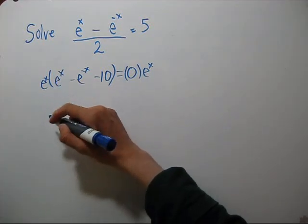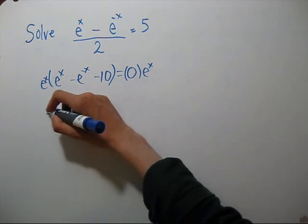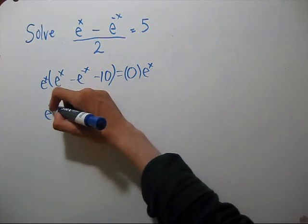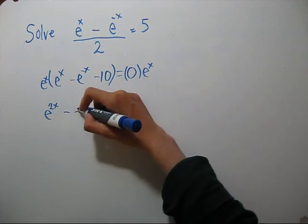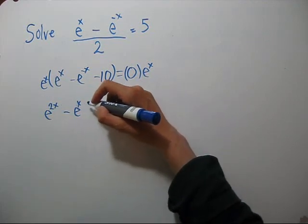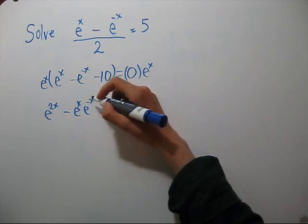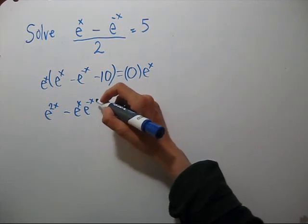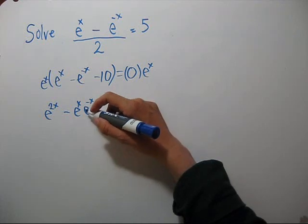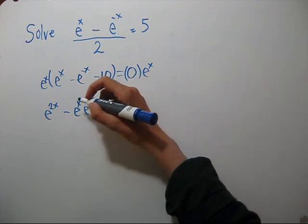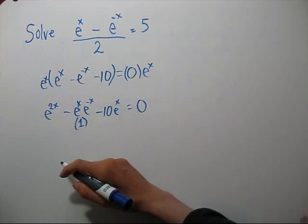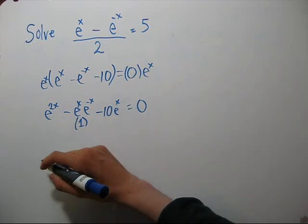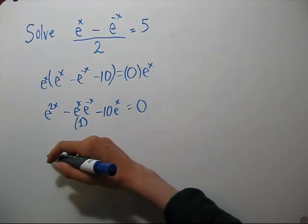Let's distribute through. E to the x times e to the x: if you have the same base and you're multiplying, you add your exponents. So this will be e to the 2x minus e to the x times e to the minus x. We'll add these exponents. x minus x is just 0, so e to the 0 is 1, and then minus 10 e to the x. Let's rewrite this so it looks more like a quadratic equation.